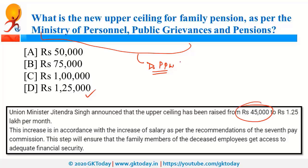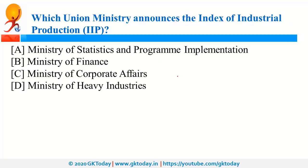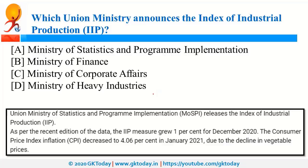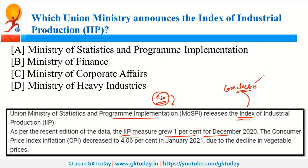The Index of Industrial Production (IIP) is announced by CSO — Central Statistical Organisation — under MOSPI, the Ministry of Statistics and Programme Implementation. It reflects industrial production data in the country. As per the recent release, IIP grew 1% for December 2020, and core sectors represent about 40% of the weightage of IIP. IIP is an indicator of industrial activity in the economy.